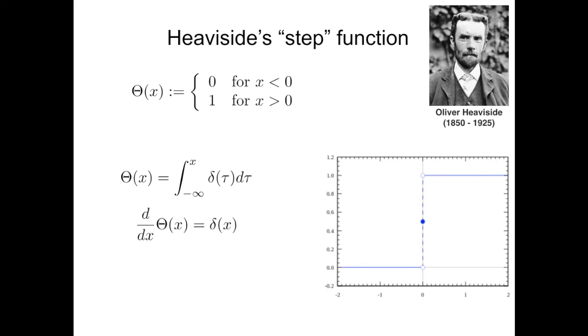And the opposite is also true. So if you take the Heaviside step function and you take the first derivative, you end up with a Dirac delta, because one is the integral of the other. So in the other direction, the inverse operator of the integral is the derivative.